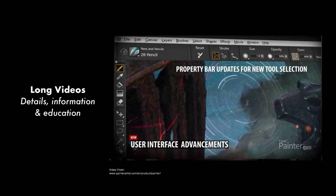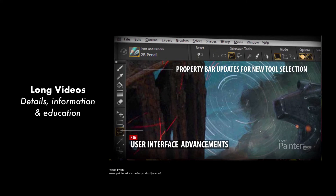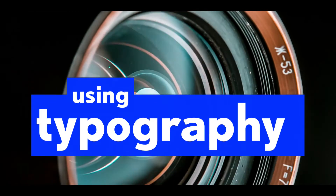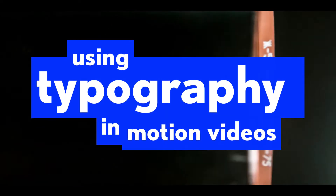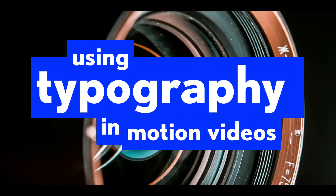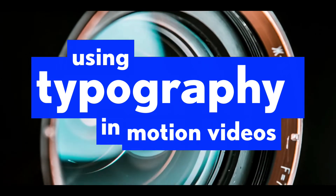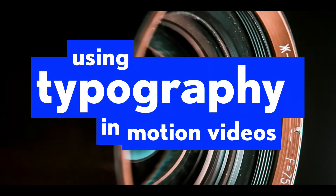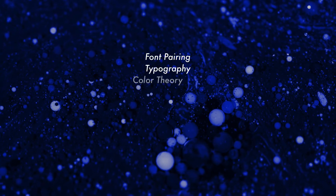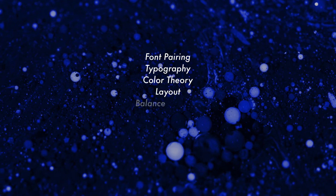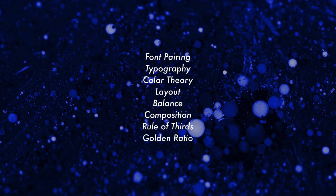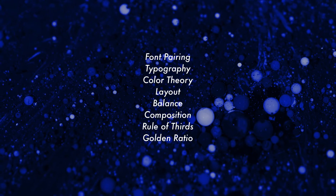We are seeing how knowing our target viewer, knowing how long to make our videos, and the pacing of the animation can be big factors in how successful our videos are. But let's go into even more detail about how to use typography, color, and layout to create a nice balance between elements in our videos. Some of the same principles of graphic design — like font pairing, typography, color schemes, and layout — are all critical factors.